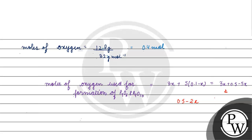Solving the equation: 0.5 minus 2x equals 0.4, so 0.1 equals 2x, therefore x equals 0.1 divided by 2, which gives x equals 0.05 moles.